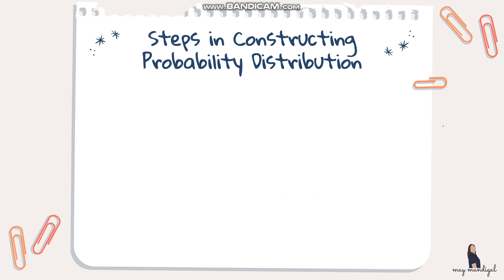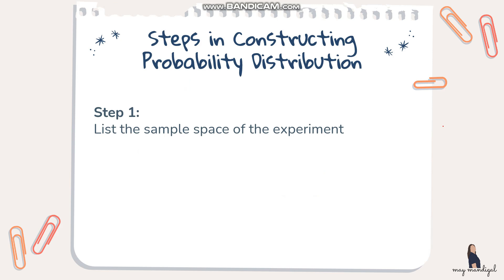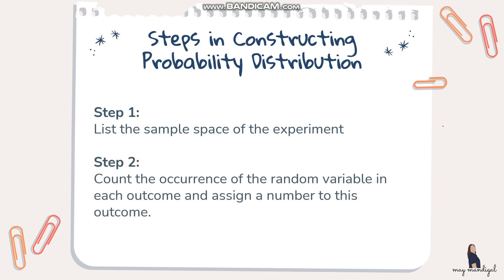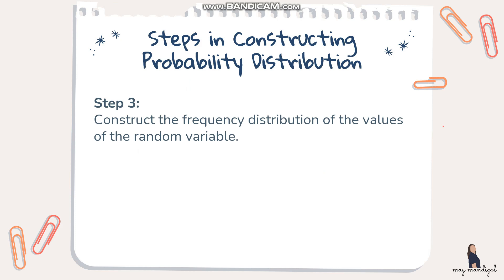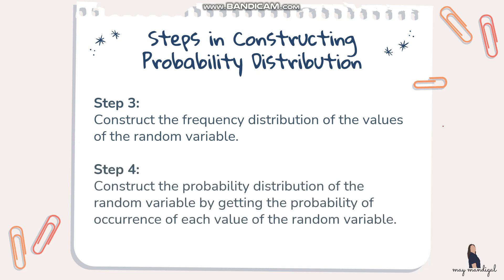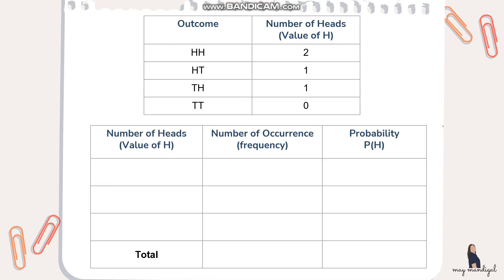The steps in constructing the probability distribution are: first, list the sample space of the experiment; next, count the occurrence of the random variable in each outcome; then construct the frequency distribution of the values of the random variable; and finally, construct the probability distribution by computing the probability of occurrence of each value of the random variable.